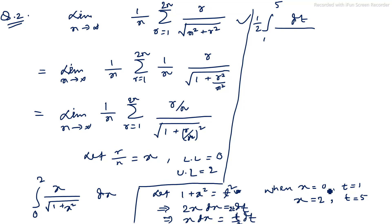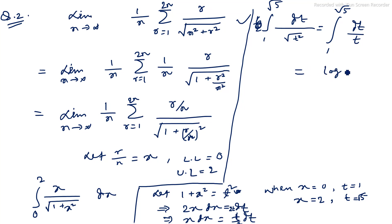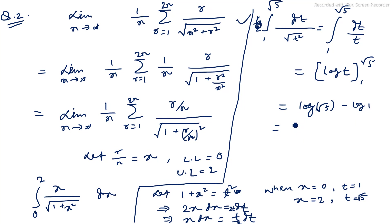The t's cancel out, giving ∫₁^√5 dt. Wait — let me correct: x dx = t dt, so the t and dt cancel, leaving ∫₁^√5 dt = [t]₁^√5.